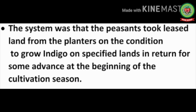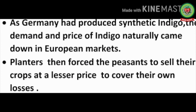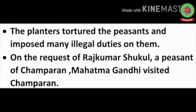As Germany had produced synthetic indigo, the demand and price of indigo fell in European markets. Planters then forced the peasants to sell their crops at lesser prices to cover their own losses. The planters tortured the peasants and imposed many illegal duties on them. On the request of Rajkumar Shukla, a peasant of Champaran, Mahatma Gandhi decided to visit this area.